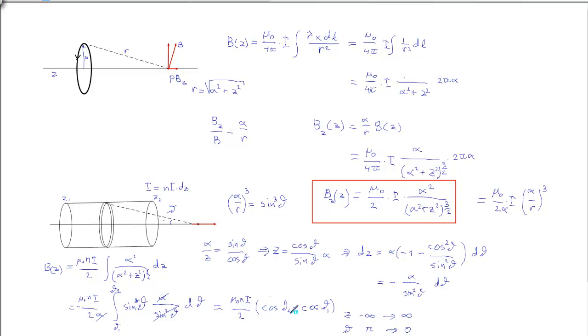If we fill this in, in this formula, we have from pi to 0. That means that theta 2 is 0, so the cosine is 1. And minus the cosine of theta 1, that's minus 1. So this gives 2. So this will give Bz is equal to mu not n times i. And of course, divided by 2 times 2, so that falls out. So the result of an infinitely long solenoid is given by this formula.